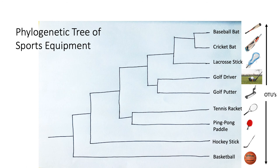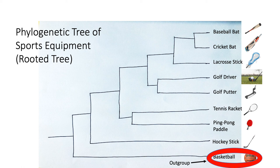Seen below is a phylogenetic tree for sports equipment. Each piece of equipment is termed an OTU — an operational taxonomic unit. OTUs can be anything from a species to different alleles within a species. This specific type of phylogenetic tree is called a rooted tree.